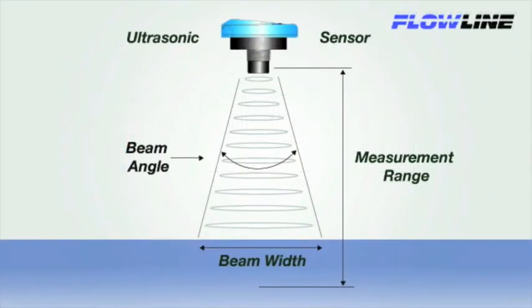These same physics apply to ultrasonic sensors. Here, the path of sound is called beam width. Beam width is largely determined by the beam angle of the transducer, which is typically 8 to 12 degrees on most ultrasonic sensors.